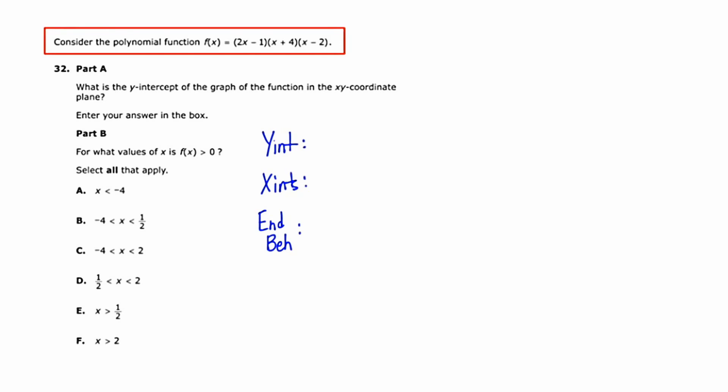So if we go to the original function in the red box, and we let x equal zero, we end up with f(x), which of course is the same as y. And if we substitute zero in for x here, here, and here, we end up with three numbers that we're going to multiply together: negative 1, 4, and negative 2. And if we multiply these numbers together, we end up getting positive 8. So the y-intercept as an ordered pair is (0, 8).